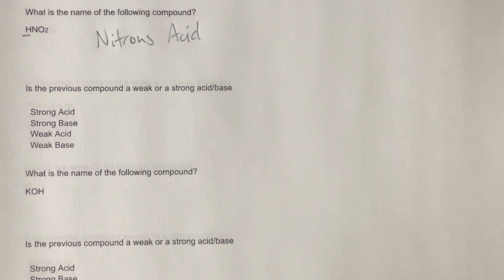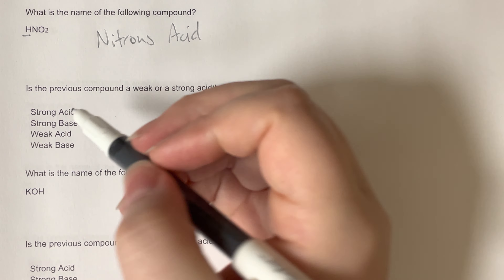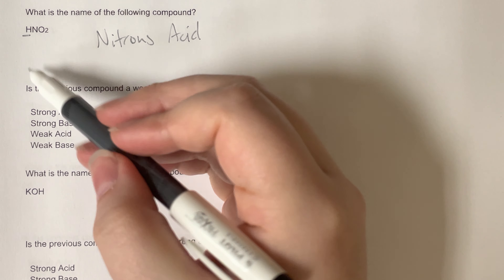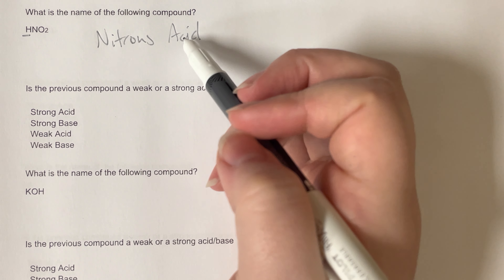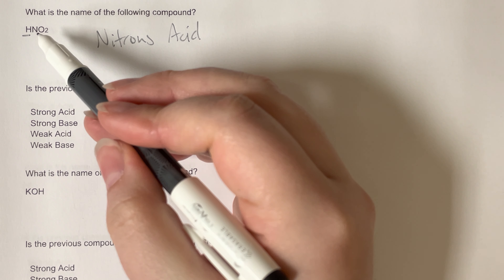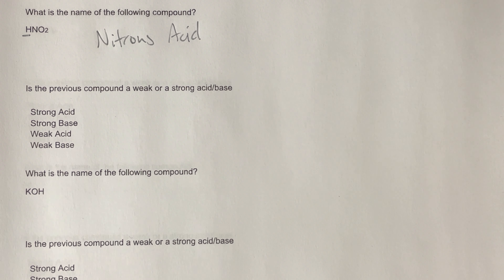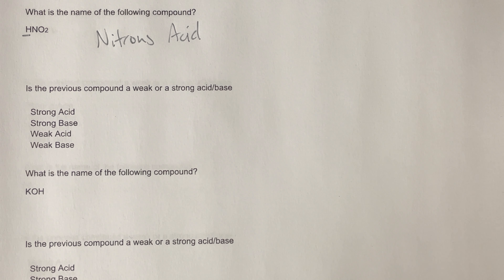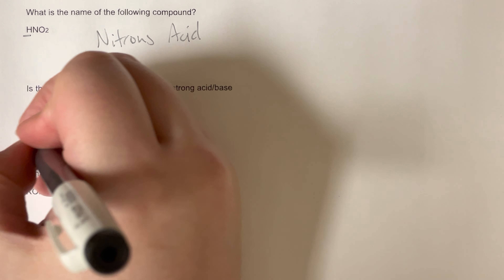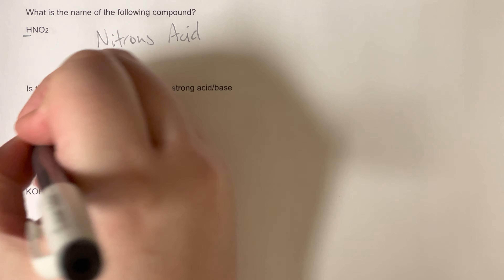Is the previous compound a weak or strong acid or base? I'm going to see if nitrite is one of my strong acids. My strong acids are hydrogen bonded with nitrate, sulfate, all halogens excluding fluorine, and all chlorine polyatomics. Nitrite is not on that list, so that makes it a weak acid.